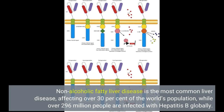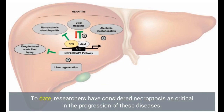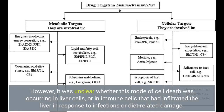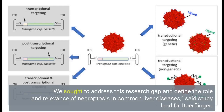Liver diseases are a significant and growing global health burden. Non-alcoholic fatty liver disease is the most common liver disease, affecting over 30% of the world's population, while over 296 million people are infected with hepatitis B globally. To date, researchers have considered necroptosis as critical in the progression of these diseases. However, it was unclear whether this mode of cell death was occurring in liver cells or in immune cells that had infiltrated the liver in response to infections or diet-related damage.